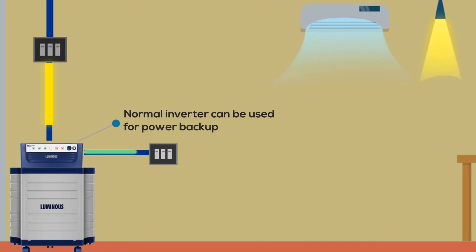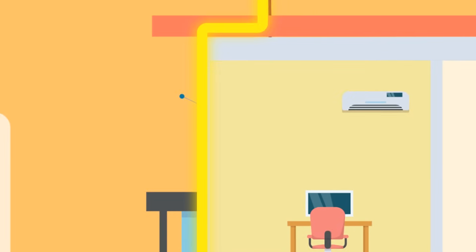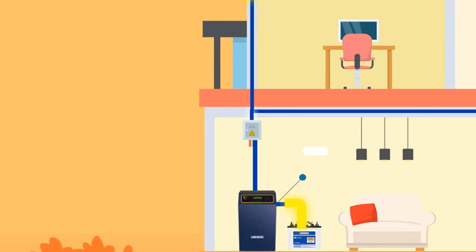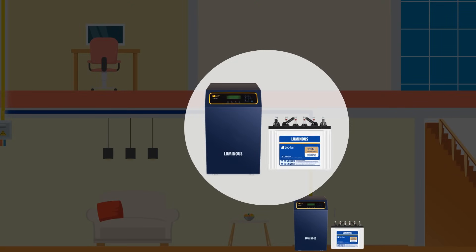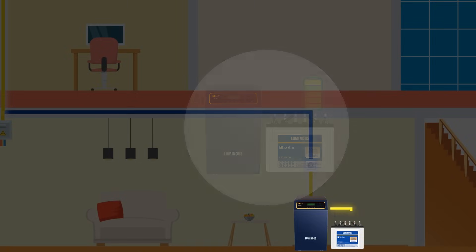Off-grid inverters, on the other hand, work just like the normal inverters used at home. In this system, DC power generated by solar panels is used to charge the solar battery. When there is a power cut, the inverter will draw stored energy from the battery, converting DC power to usable AC power for running electrical appliances.